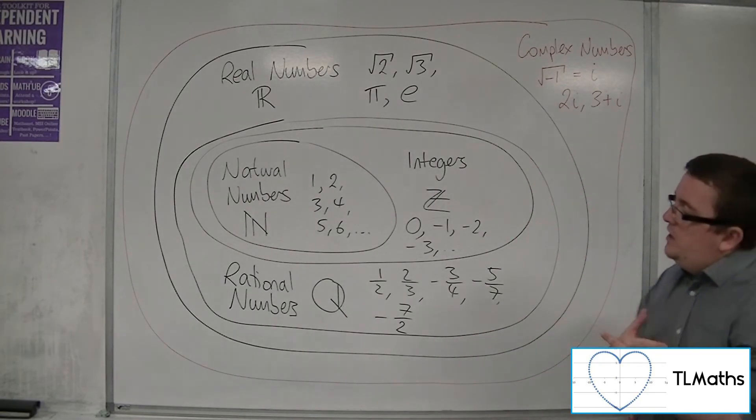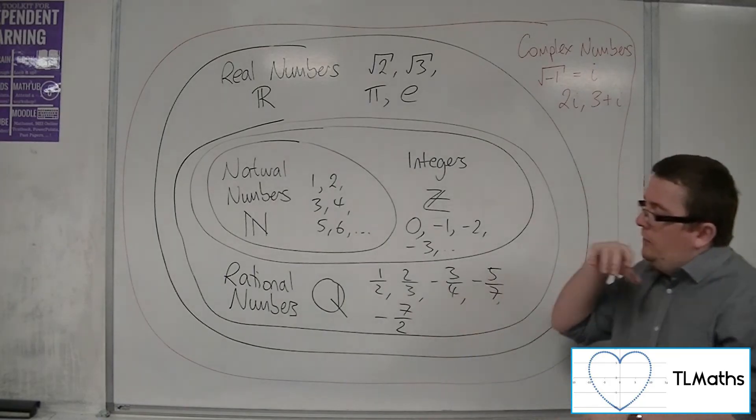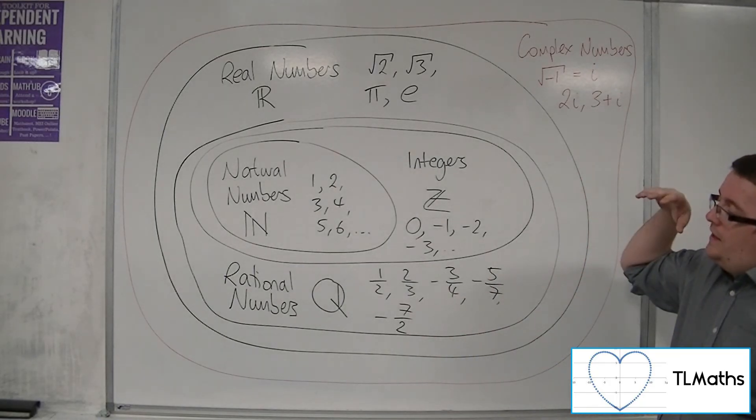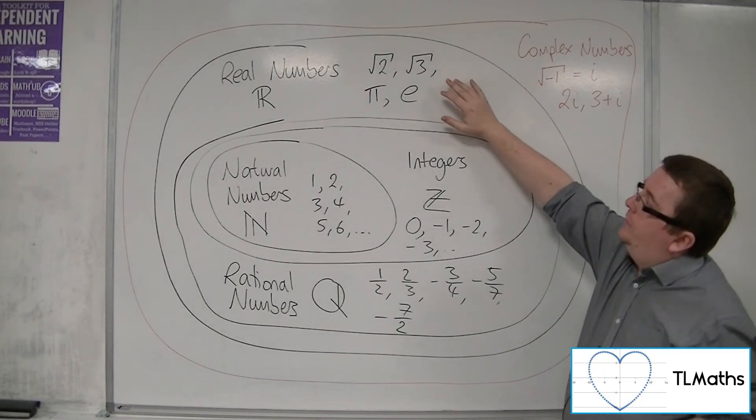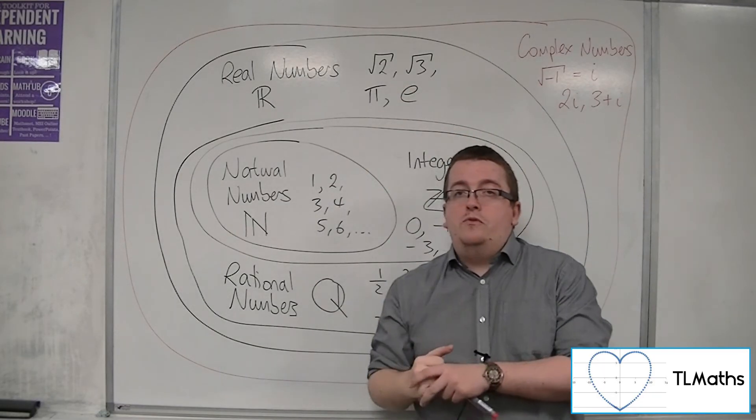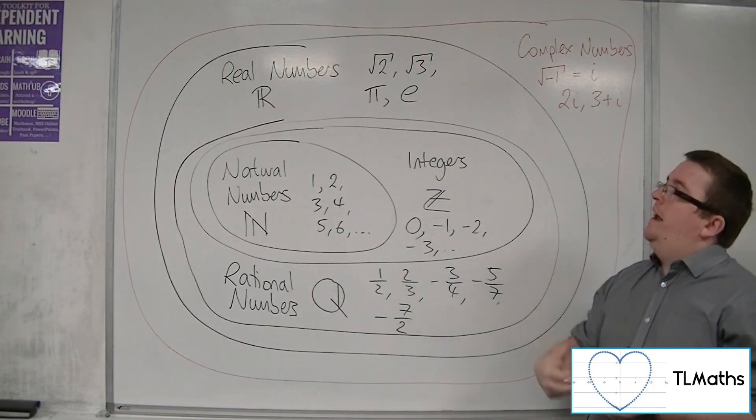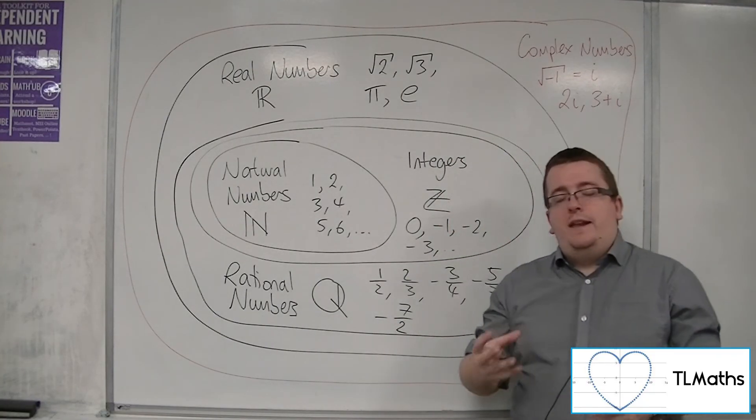So what we're going to be doing really in this section is moving forward with looking at irrational numbers. Things like root 2 and root 3 or root 8. To really get our heads around how they work and how we can manipulate them.